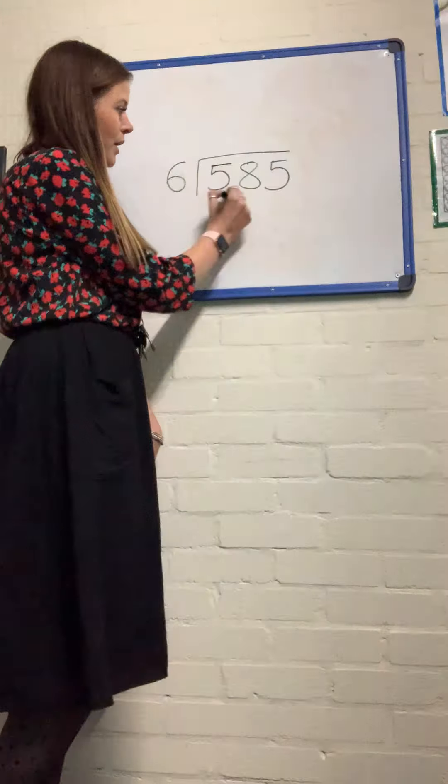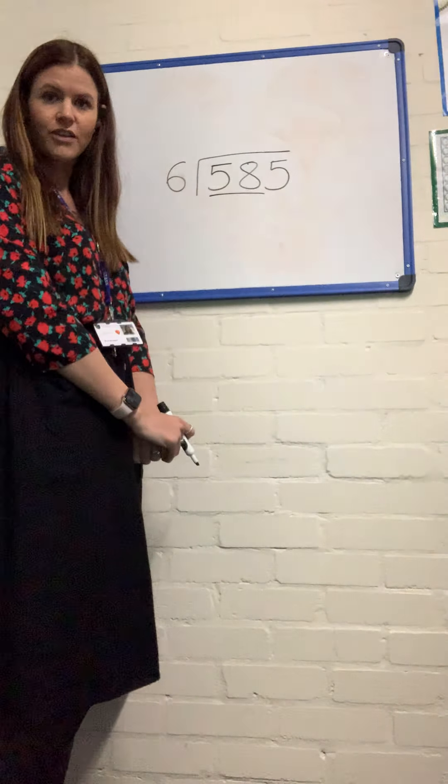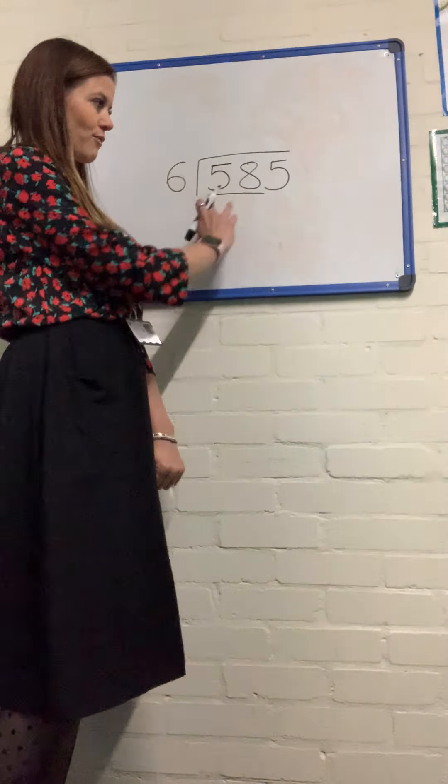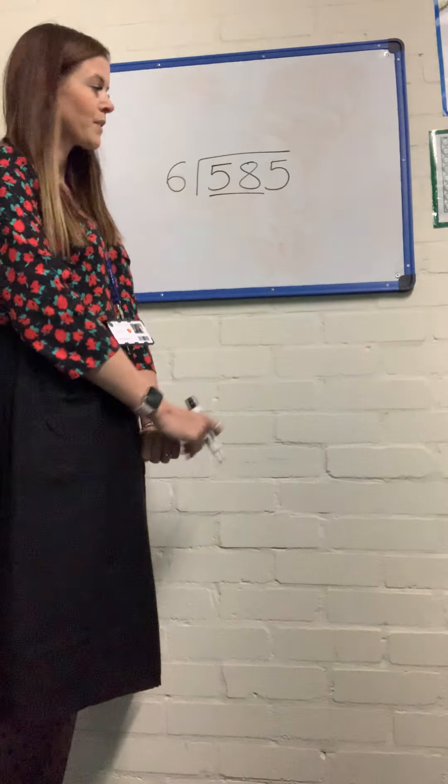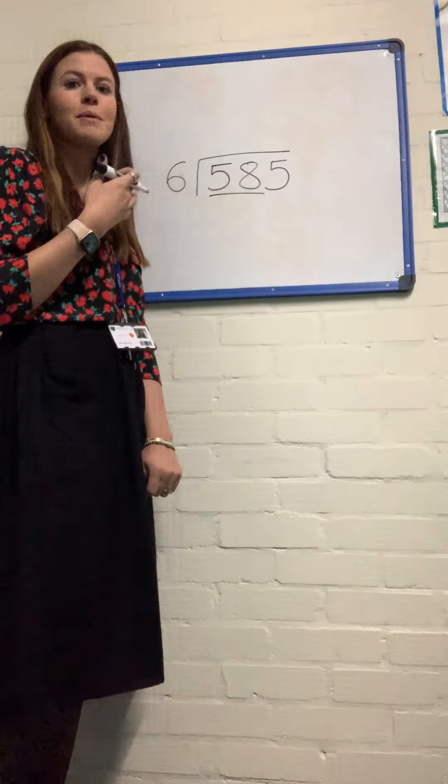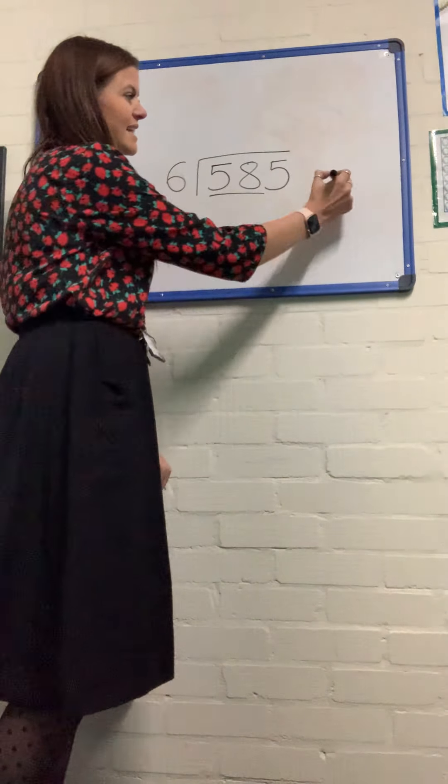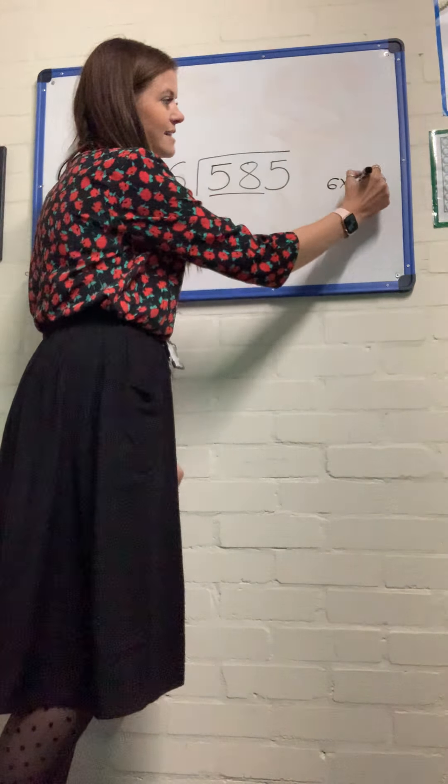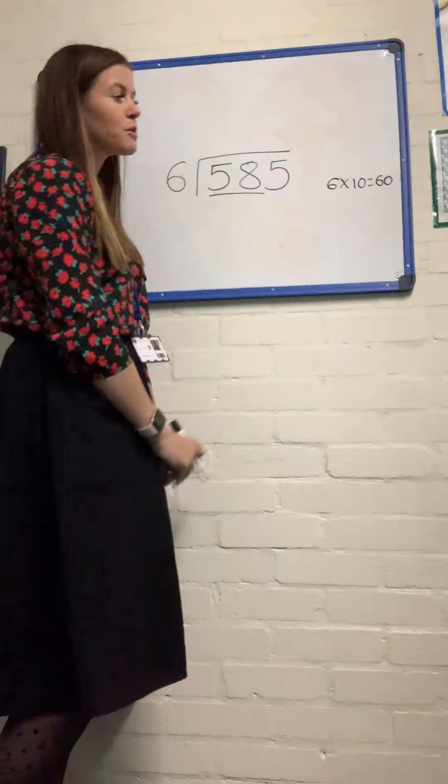We've got to begin with, we're going to look at 58 as the first dividend and we know that 58 represents 580. So how many 6s are in 58? I'll need to count up in my 6s. Well, I know that 6 times by 10 is 60, so I can subtract 1.